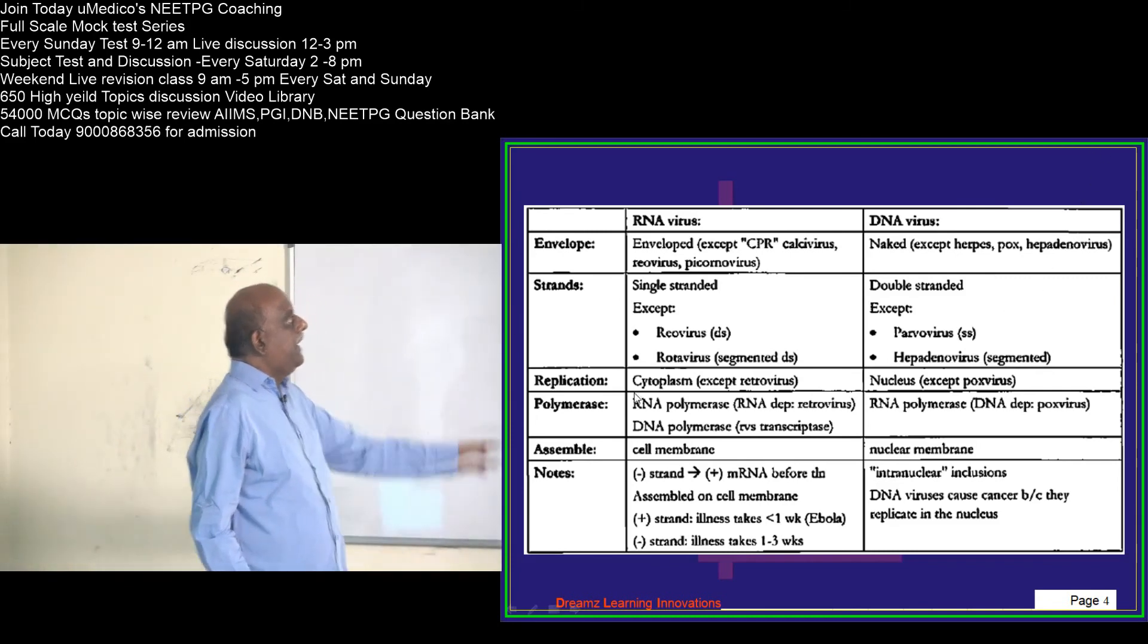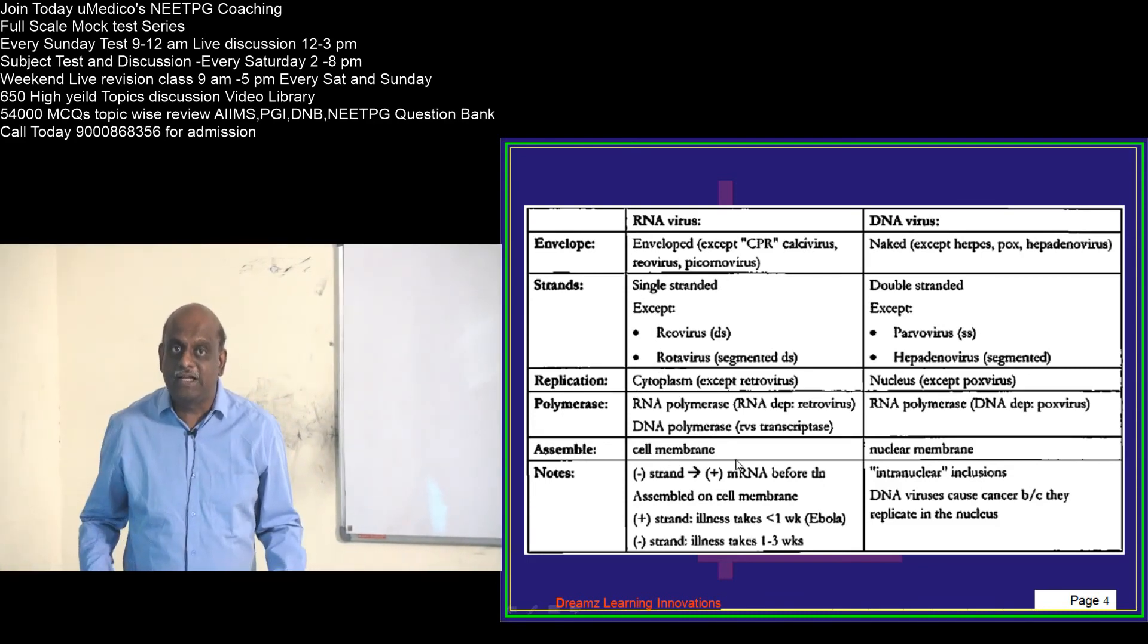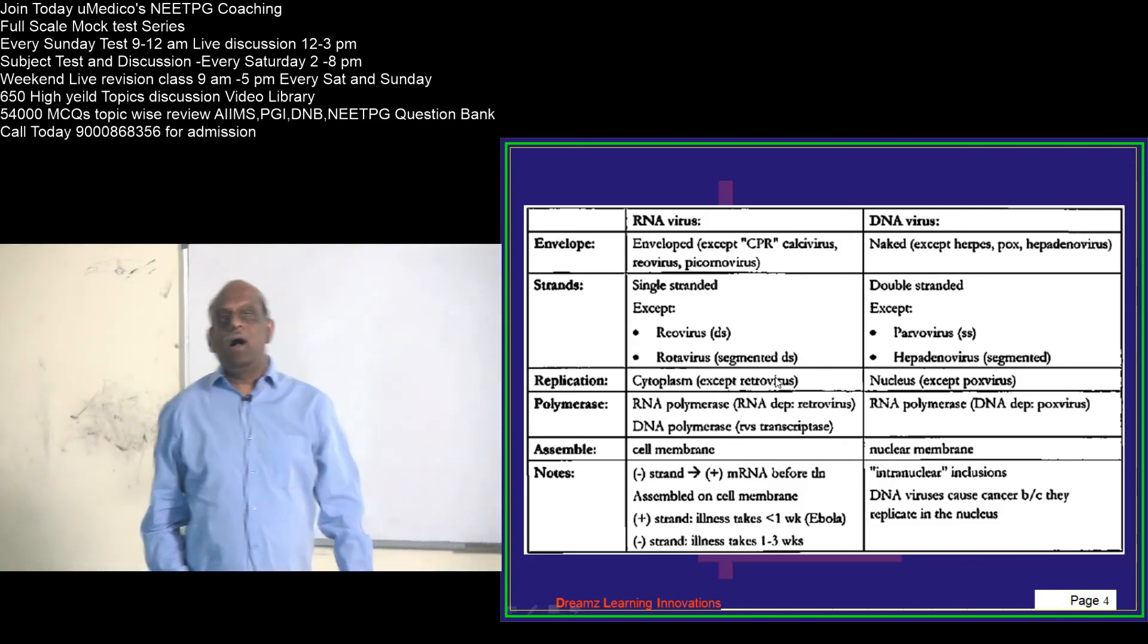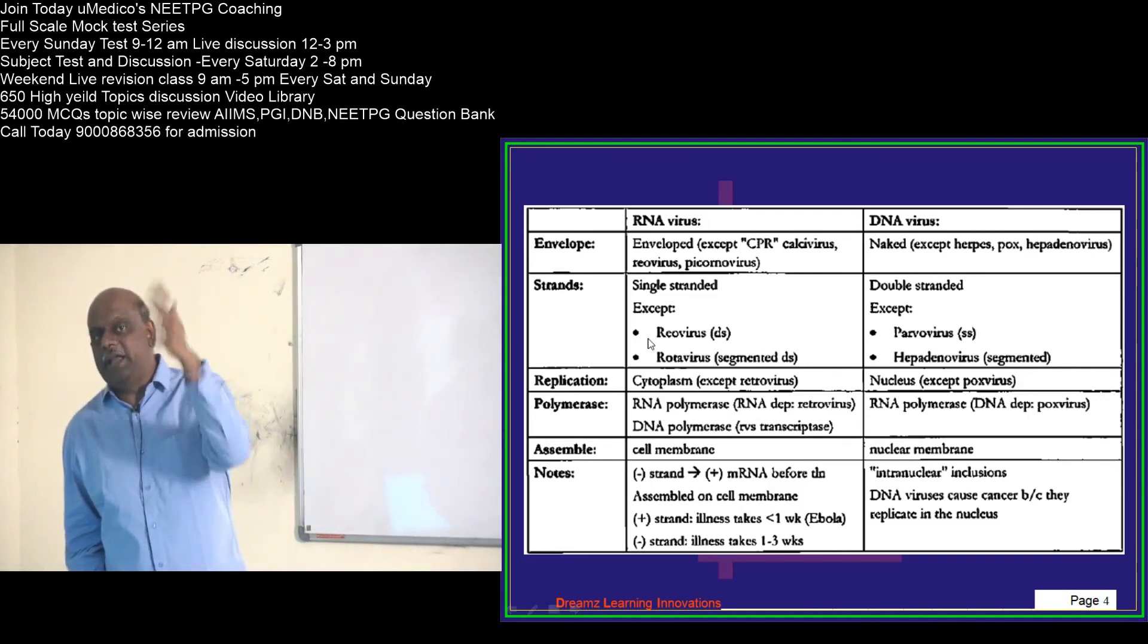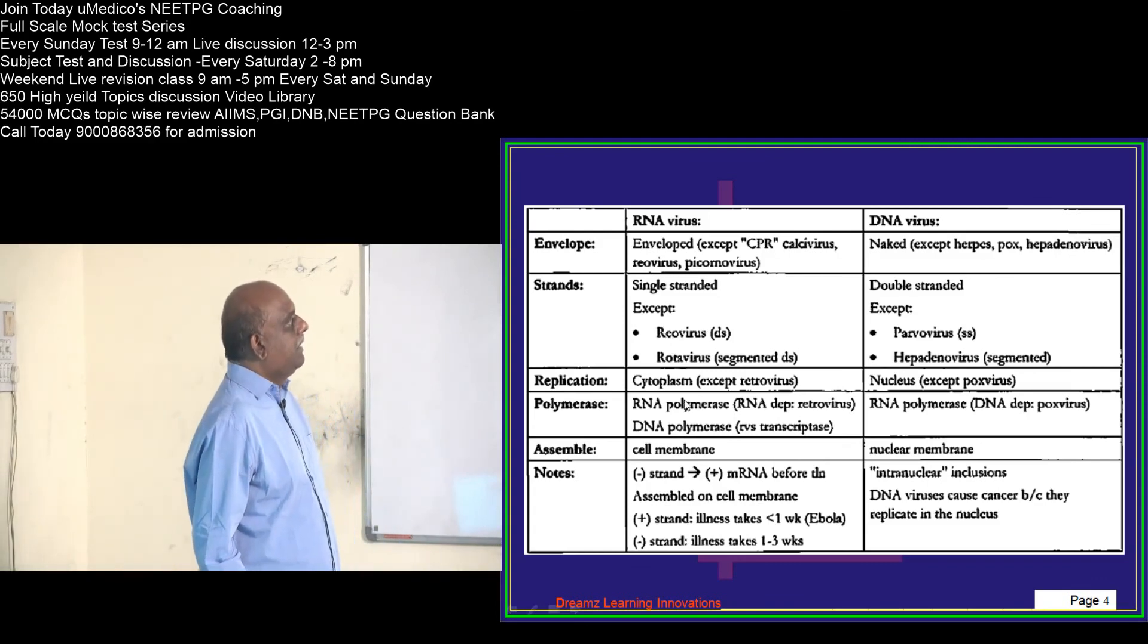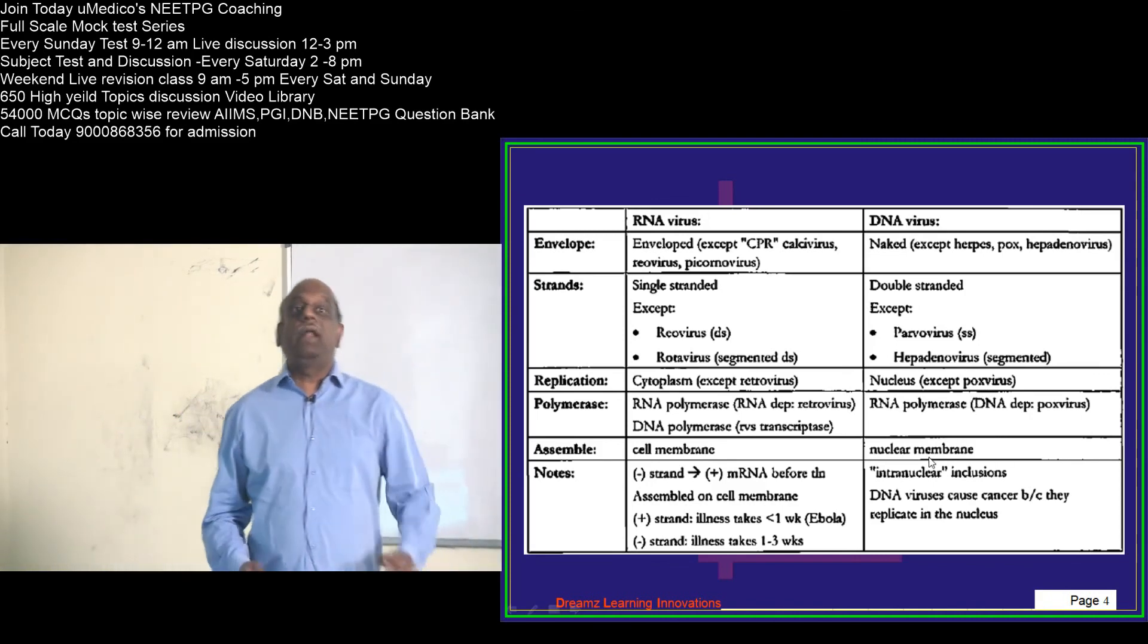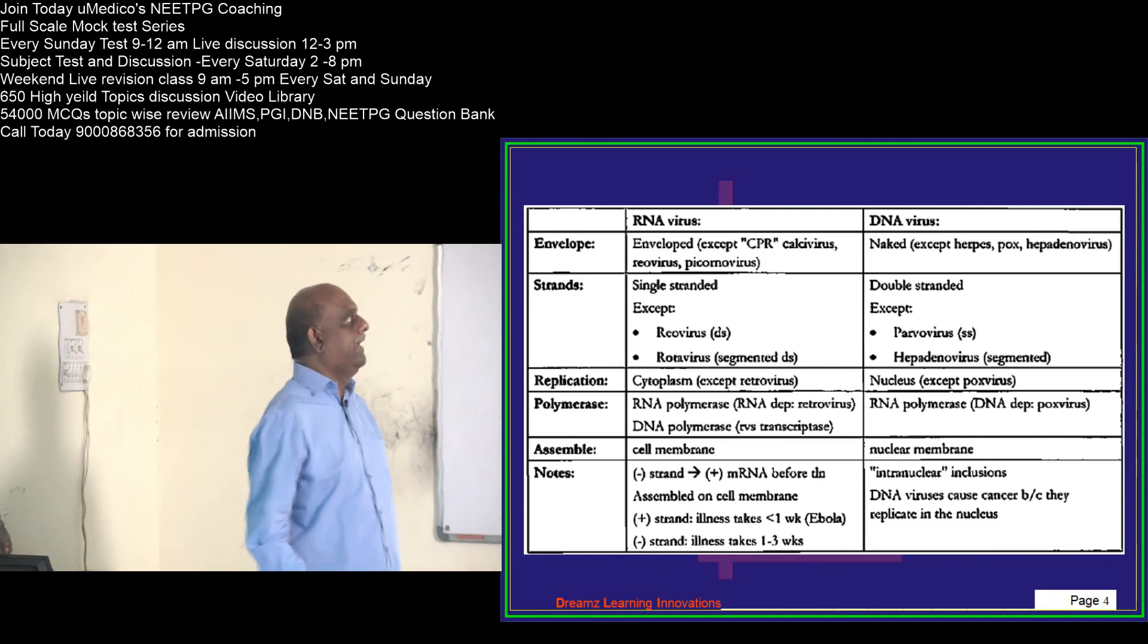RNA viruses undergo replication in cytoplasm, whereas DNA viruses undergo replication in nucleus. But what is an exception? Retrovirus is an RNA virus but it doesn't undergo replication in the cytoplasm, it occurs in the nucleus. Poxyvirus is a DNA virus. Instead of replicating in the nucleus, it will undergo replication in the cytoplasm.